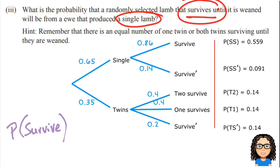So let's look at the different combinations that we've got there and think which ones of those combinations meet the criteria of a lamb surviving at all. So the first one, single surviving, yes. Single not surviving, no.